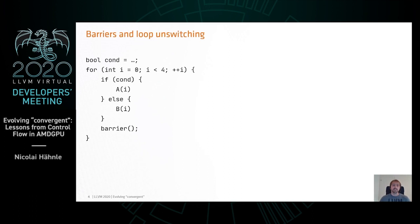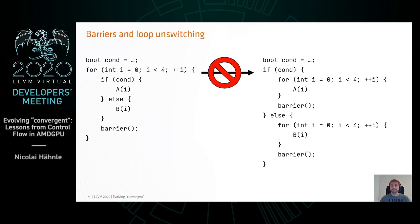In particular, if you look at this example, there's a loop with a loop-invariant branch inside, which ordinarily you would think you could do loop unswitching. Actually, that's wrong, because if you have a thread group where threads have different values for the condition, they will reach different points in the program for the barrier, which is bad.